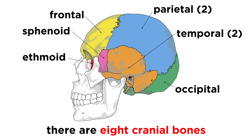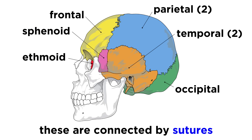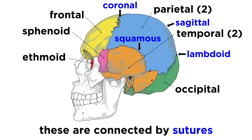All together, there are eight cranial bones: the frontal bone, two large parietal bones, the occipital bone, two temporal bones, the sphenoid bone, and the ethmoid bone. The cranial bones are connected by sutures, and those have specific names as well. These are the coronal, sagittal, lambdoid, squamous, and occipitomastoid sutures.